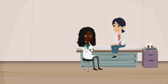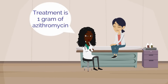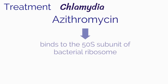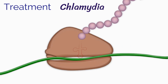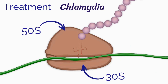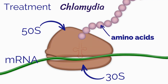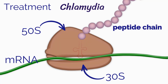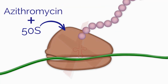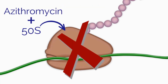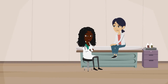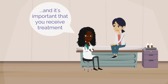Our patient's test results come back. Her chlamydia test is positive, and everything else is negative. Treatment is with a single dose of 1 gram of azithromycin, and is considered curative. Azithromycin binds to the 50S subunit of the bacterial ribosome. Ribosomes serve as the site of protein synthesis and have both a 50S and a 30S subunit. They bind to messenger RNA and use its sequence to determine the correct sequence of amino acids. Amino acids are linked together into peptide chains and then fold into the correct protein structure. Azithromycin binds to the 50S subunit, which arrests RNA-dependent bacterial protein synthesis, inhibiting bacterial growth. You discussed the importance of treating her partner, as well as the importance that she also receives treatment herself.